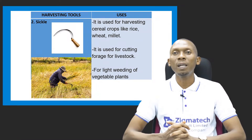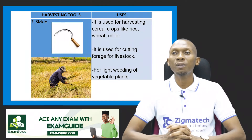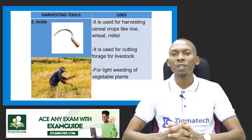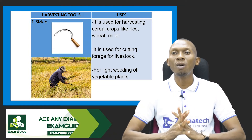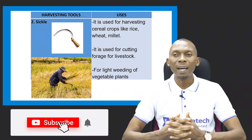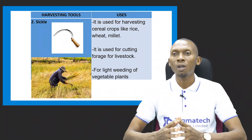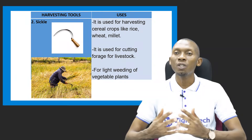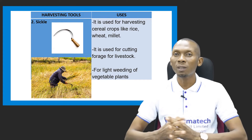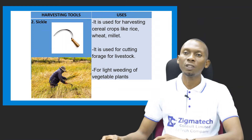We have the sickle as another harvesting tool. It is used for harvesting cereal crops like rice, wheat, and millet. It can also be used for cutting forage for livestock — the vegetative parts of plants given to livestock for food. It can also be used for light weeding of vegetable plants.